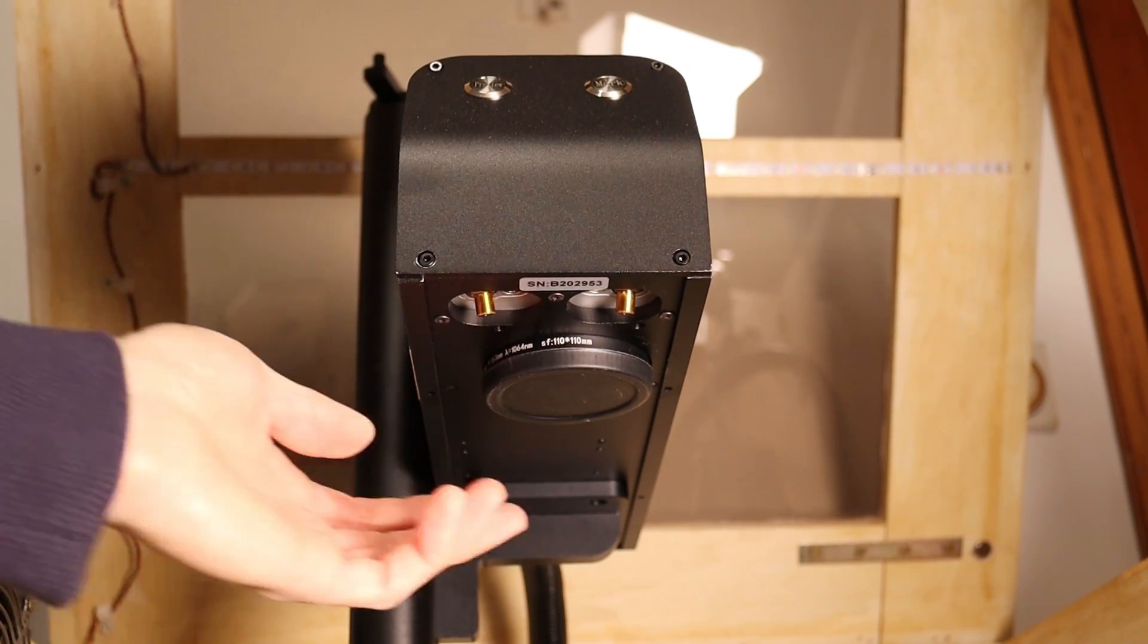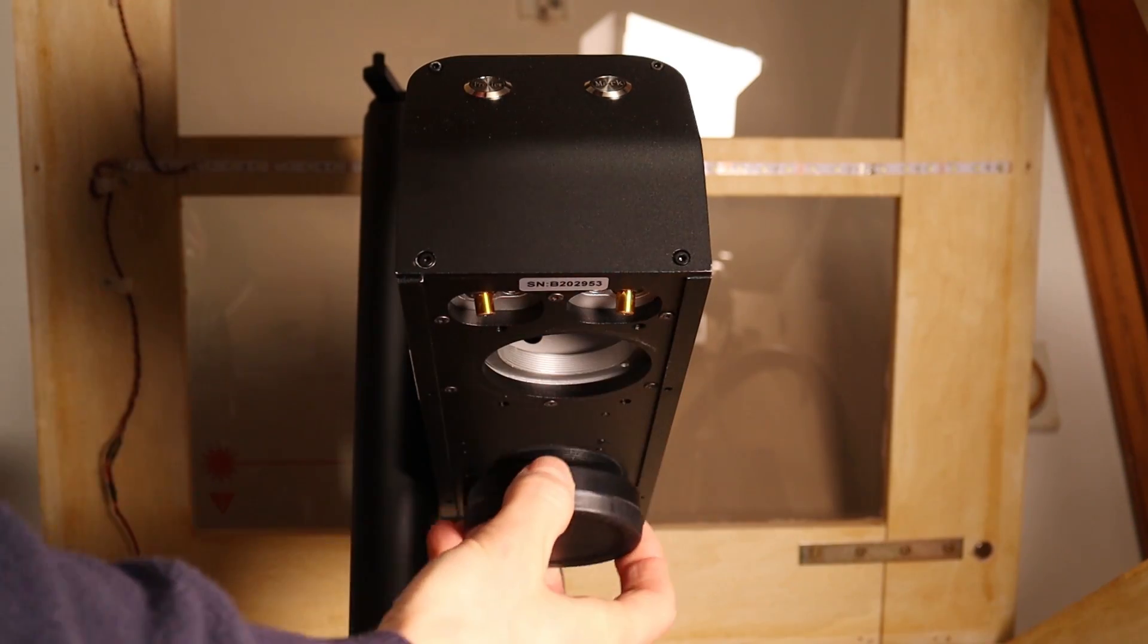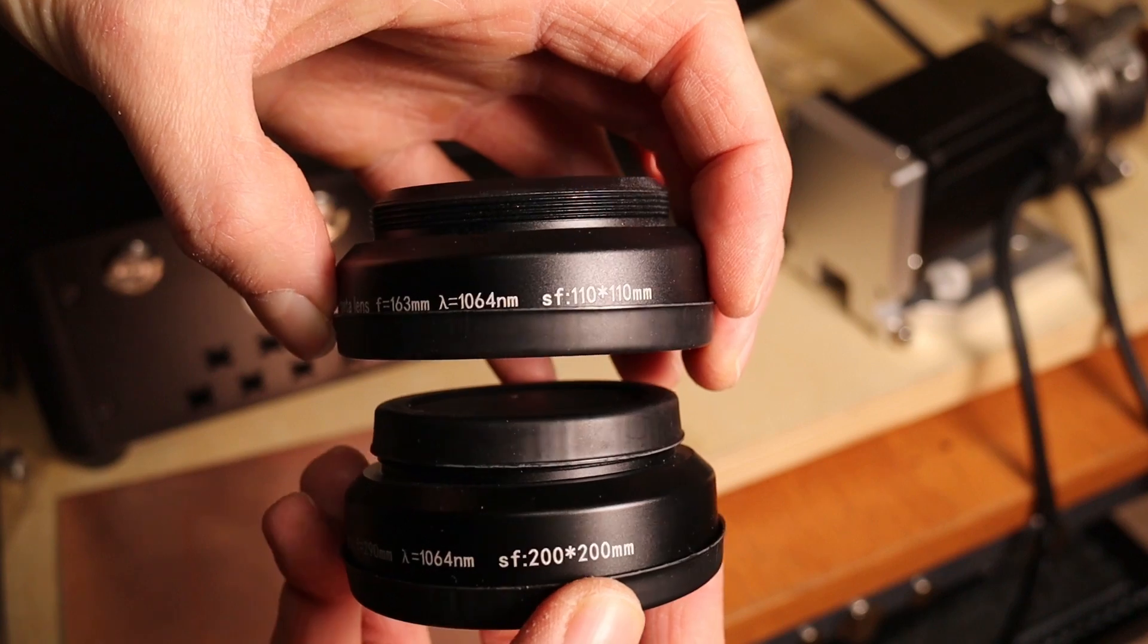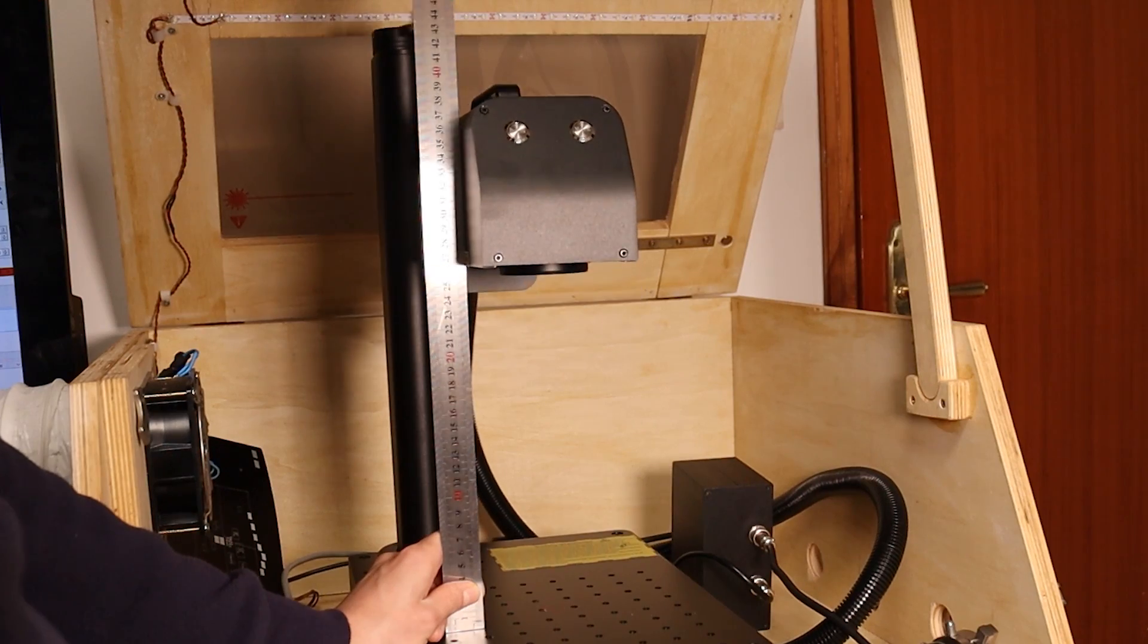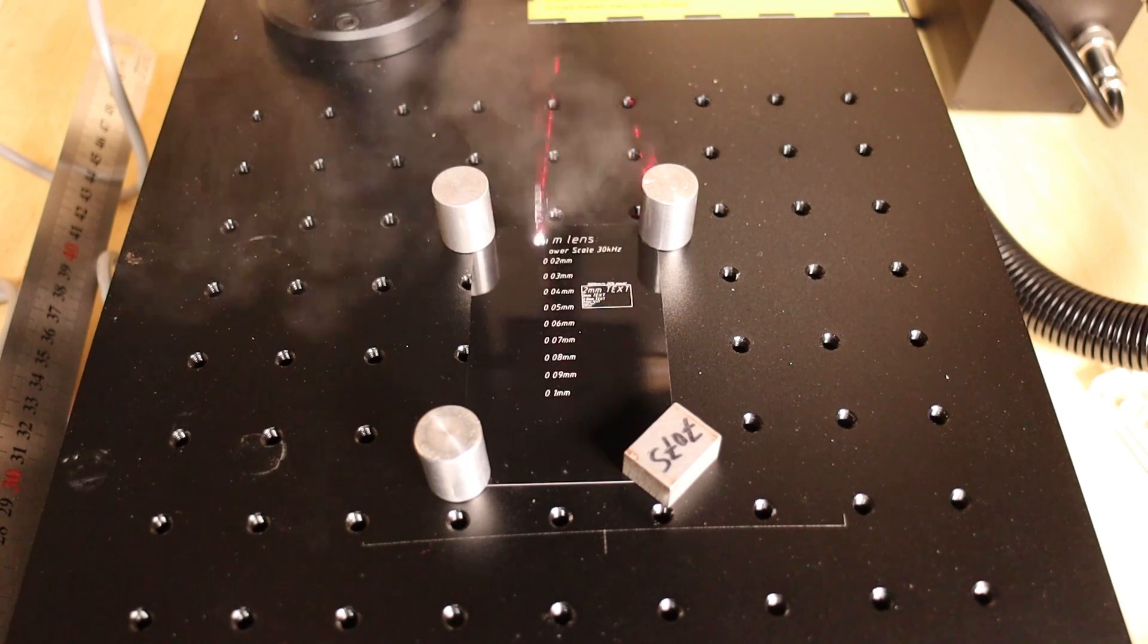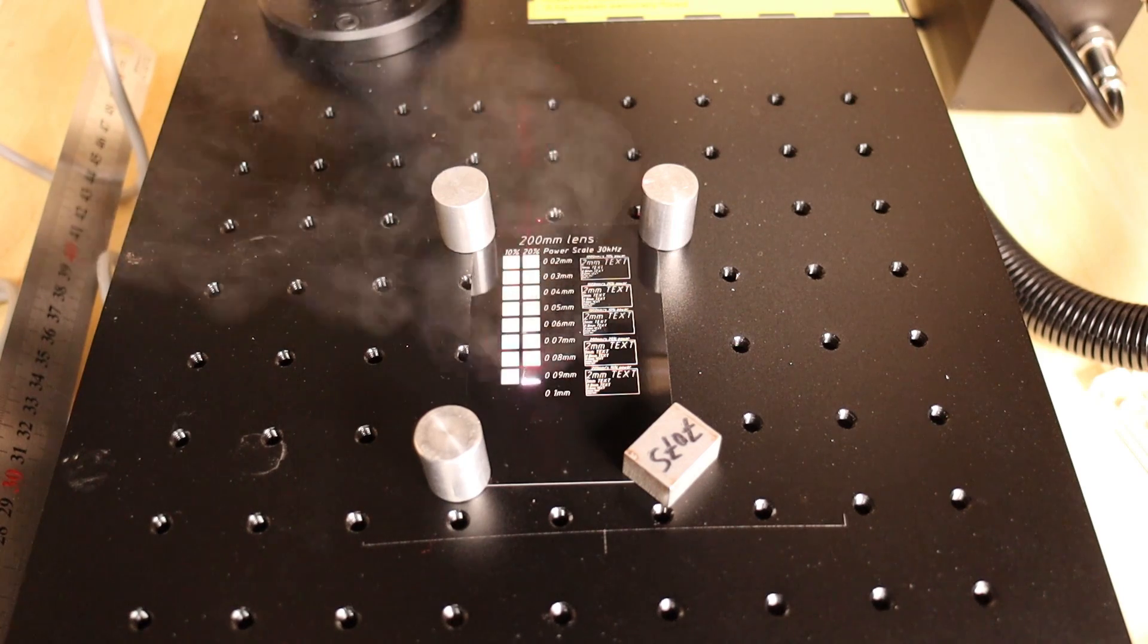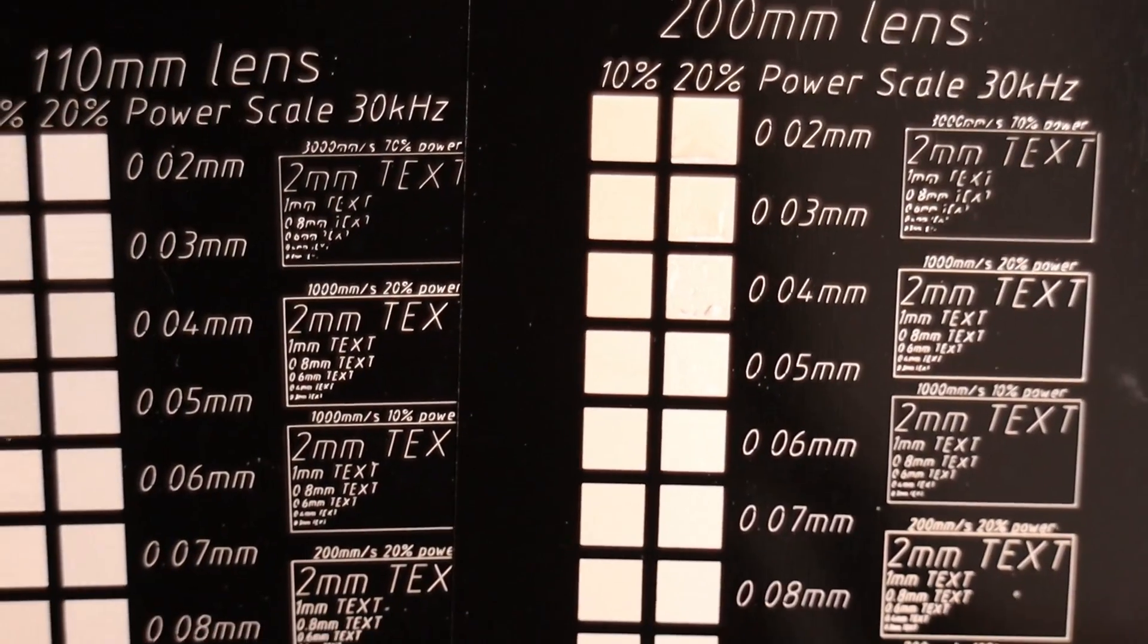The default lens of this laser has a working area of 110 mm square. You can also get the bigger lens which expands your work area to 200 mm. The bigger lens also has longer focusing distance. With a bigger lens, you get a slightly bigger laser focus spot size and a bit less power for engraving. I did the same interval test with the 200 mm lens and here are the results.